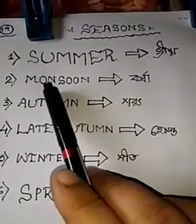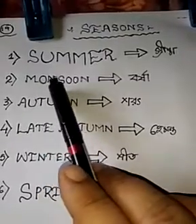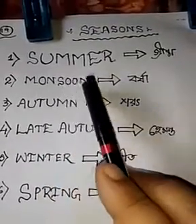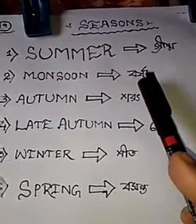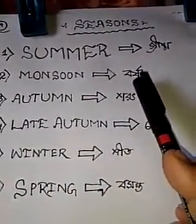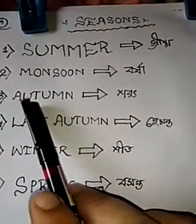Next one is monsoon — M-O-N-S-O-O-N. In Bengali we say it Borsha. Next is autumn.